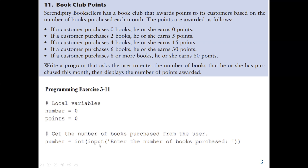Since we are going to use relational operators to compare, the input function normally gives us data of type string, and we can't use strings in arithmetic operations. So we convert it to int. It's better to use int instead of float here because the number of books is based on counting — you cannot buy 20.7 books. Either you buy 20 or you buy 21, so the type will be int, the whole number.